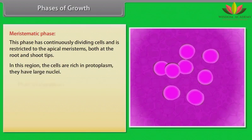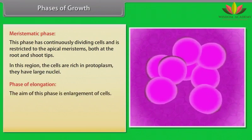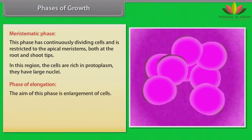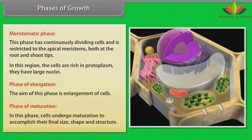The phase of elongation aims at enlargement of cells. In the phase of maturation, cells undergo maturation to accomplish their final size, shape and structure.